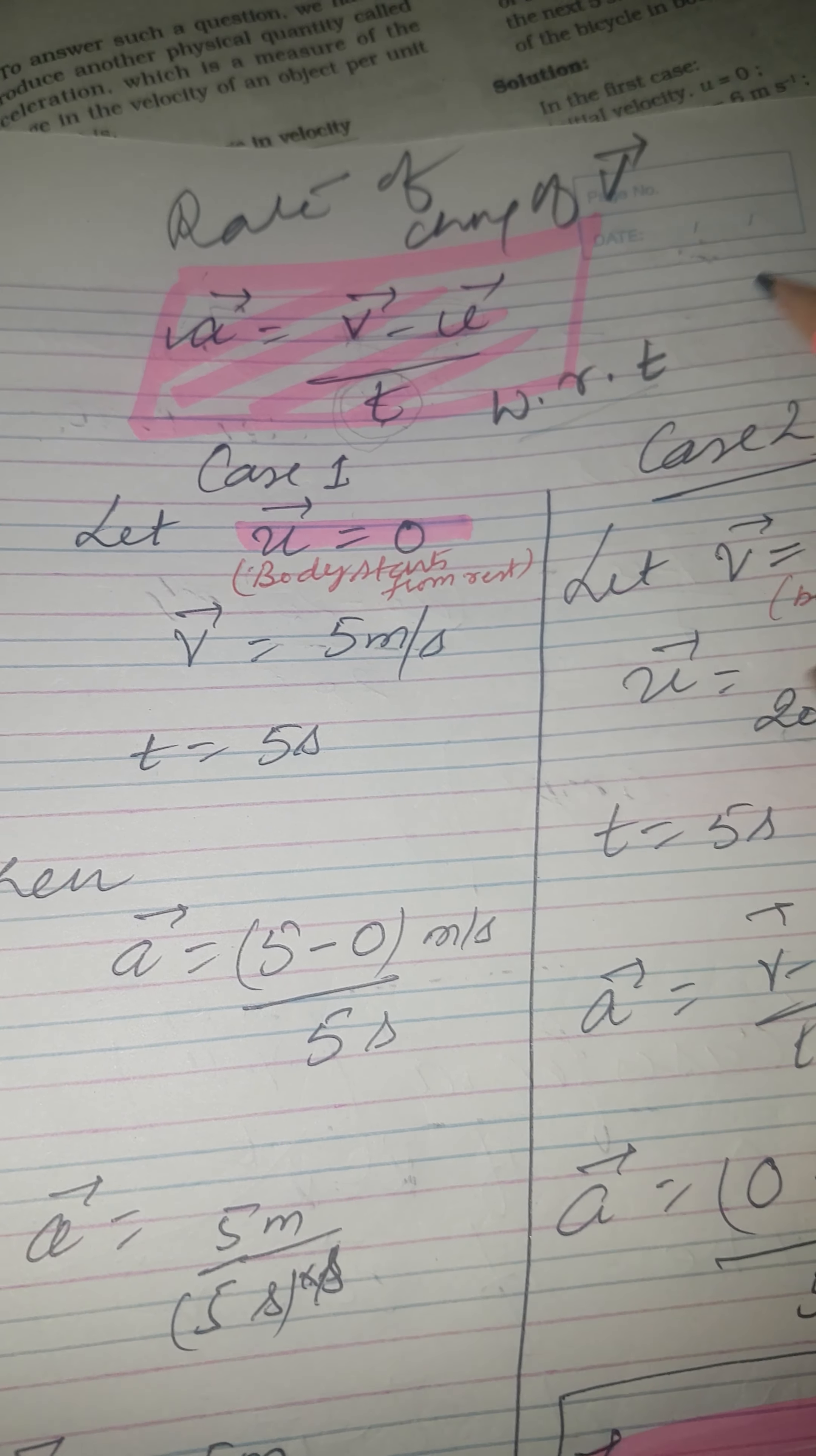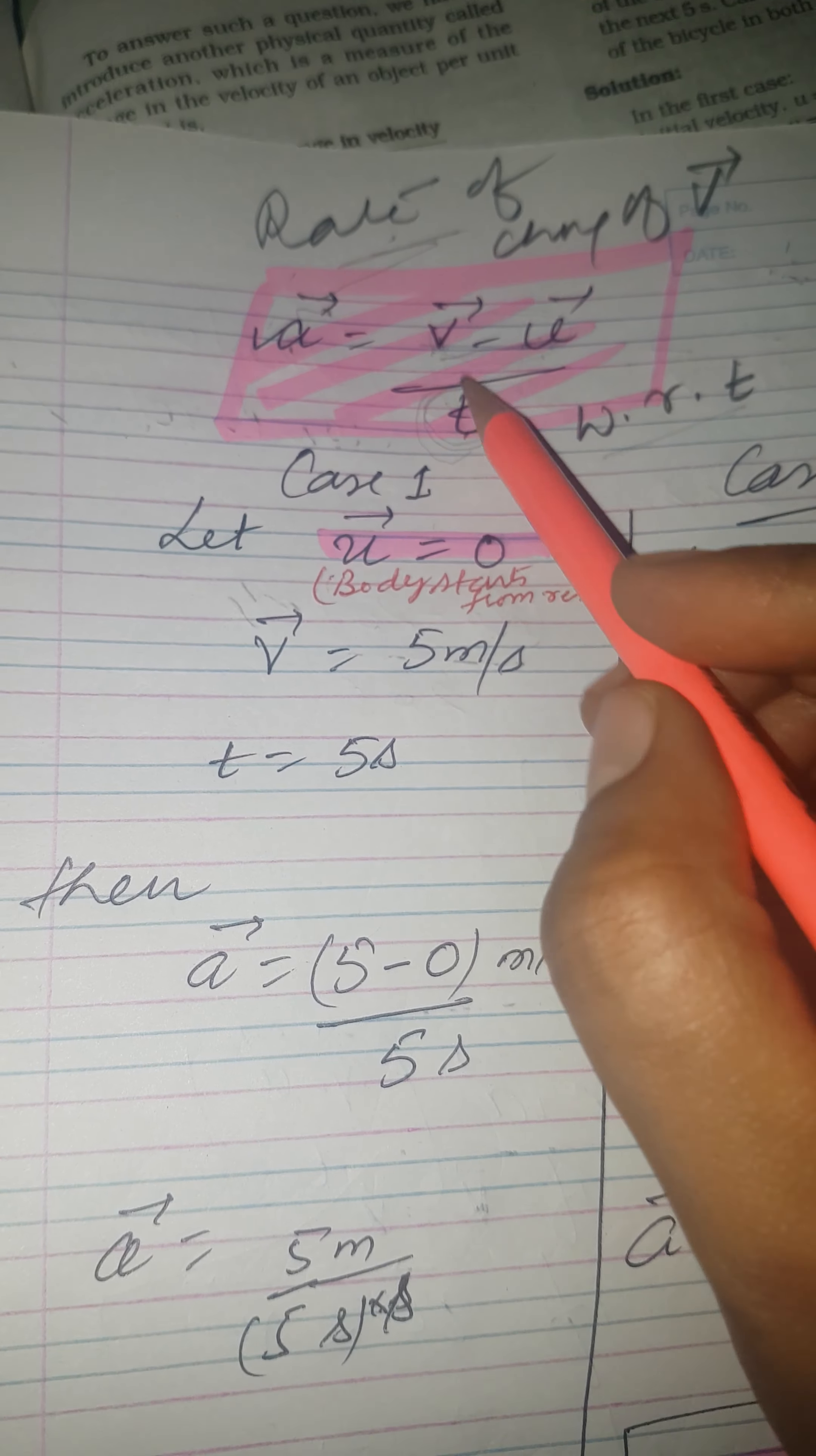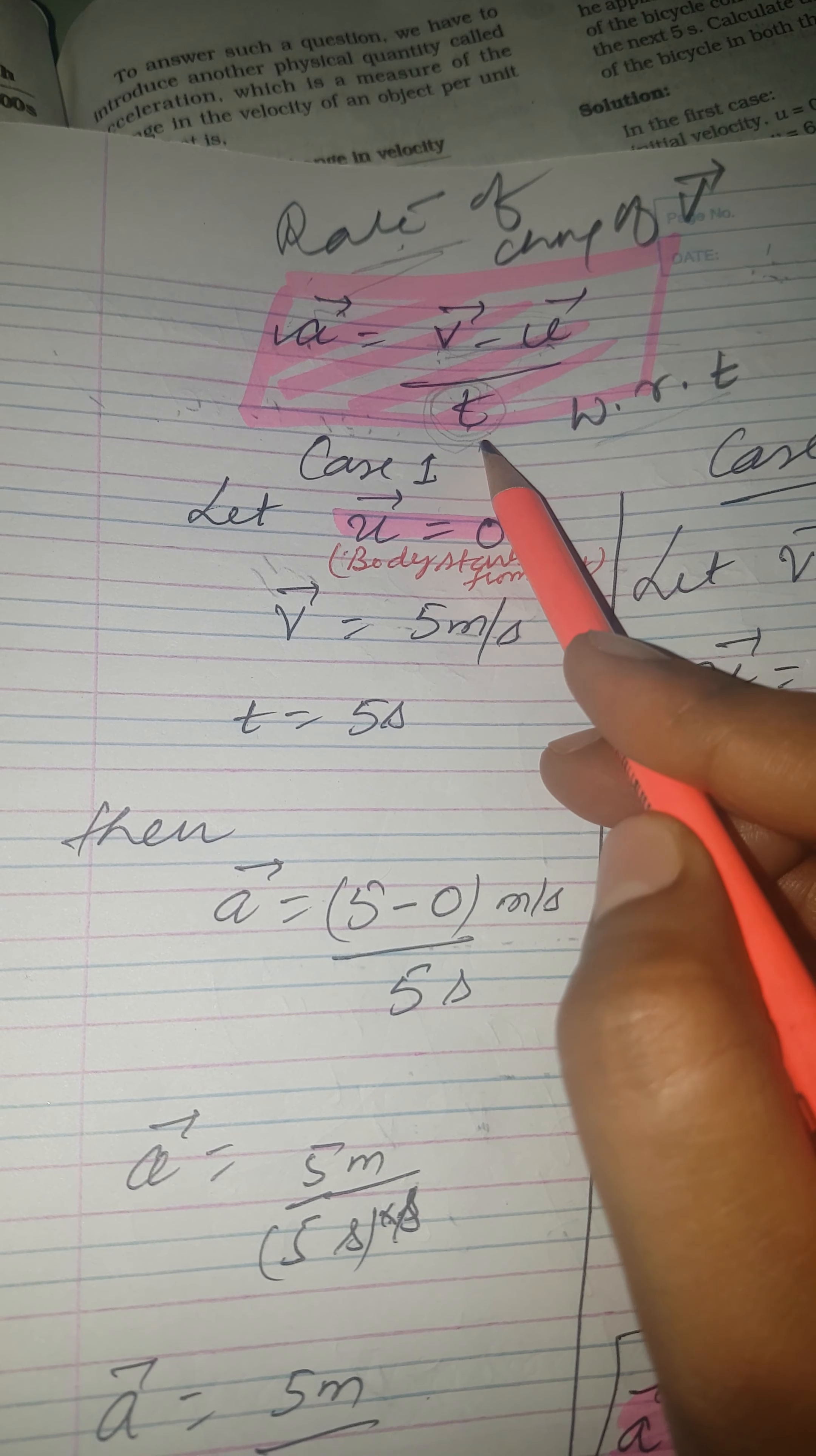This is change of velocity and this time is represented by this word rate. This rate word actually here means time. So this is how we can define acceleration - it is the change in velocity per unit time.